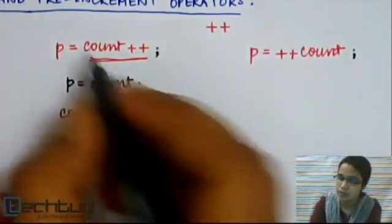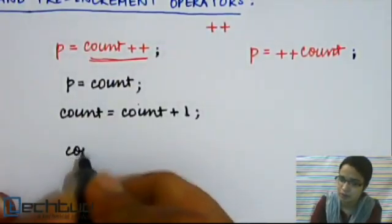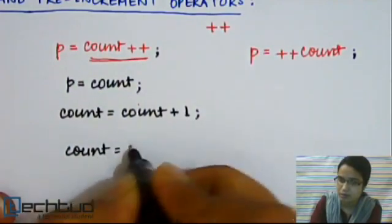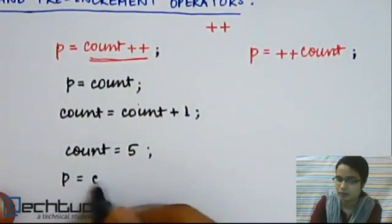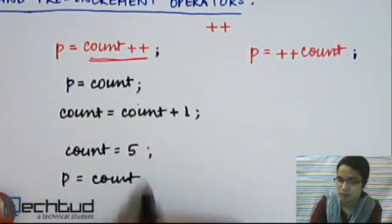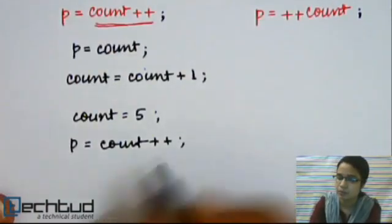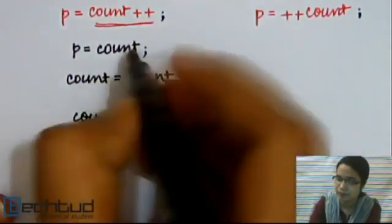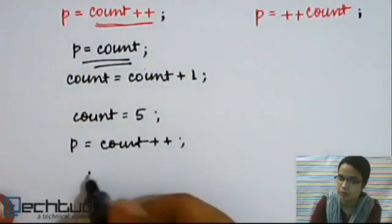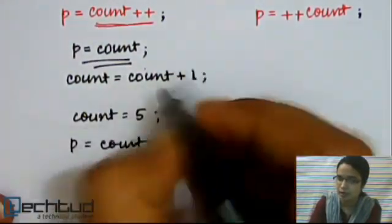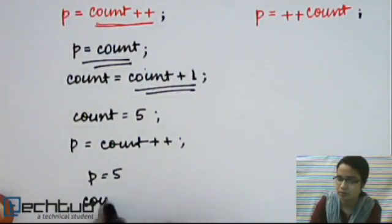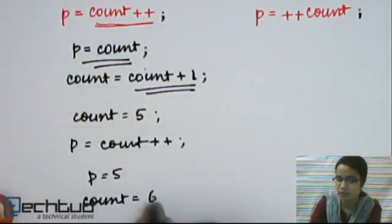So what is happening? If COUNT initially contains 5 and then you write COUNT++, after execution of this statement, you will have P equal to 5. After this statement is executed, you will have COUNT equal to 6.